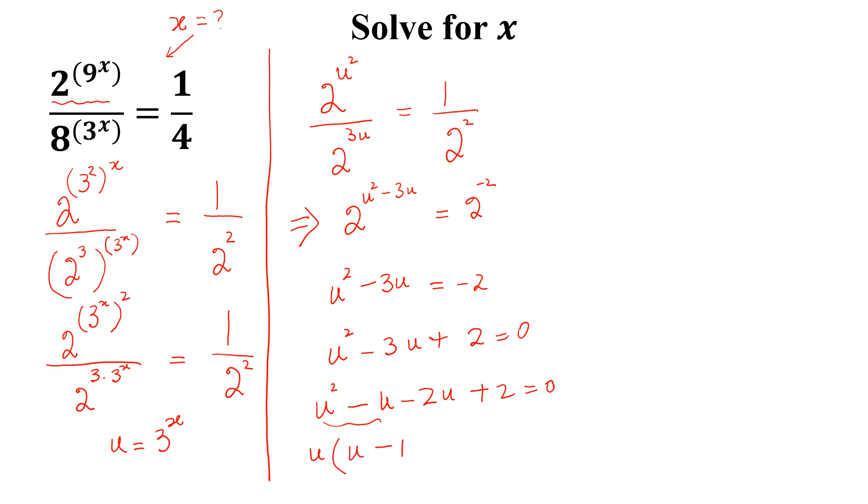so u into (u - 1) taking -2 common, so (u - 1) equal to 0.